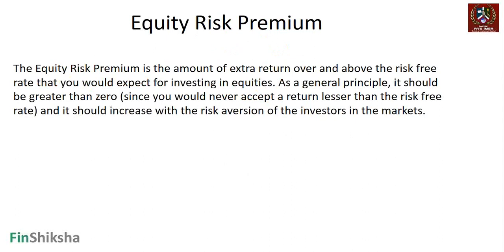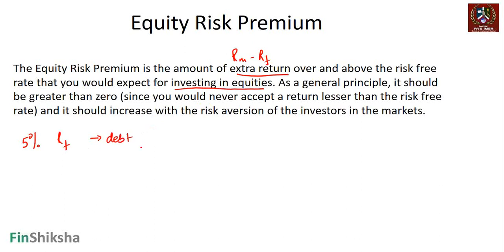The equity risk premium is the amount of extra return — that's why we use the term RM minus RF — over and above the risk-free rate that you would expect for investing in equities. As a general principle it has to be greater than zero, because if you're getting 5% in the risk-free rate there is no reason to get lesser than that in equities. Equities are riskier and involve a non-zero amount of risk, whereas the risk-free rate is essentially the debt rate.